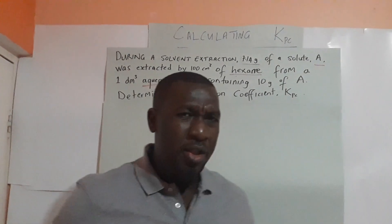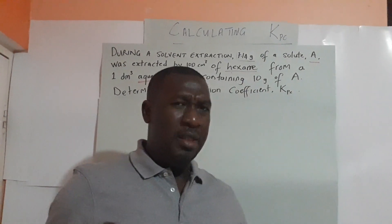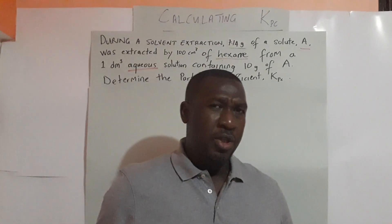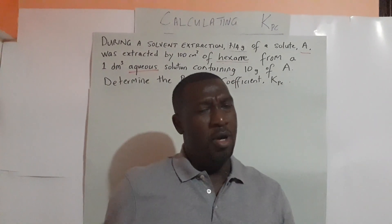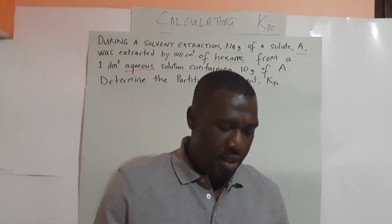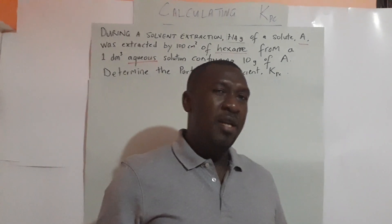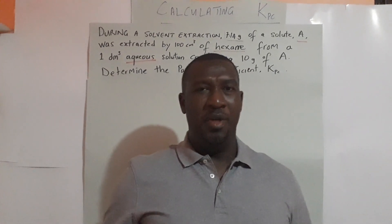What essentially happens is that you form an equilibrium in which the solute is distributed across the two solvents. We have to write out that equilibrium expression first, and then we can write the expression for the equilibrium constant.